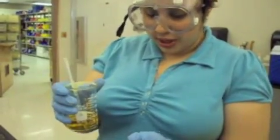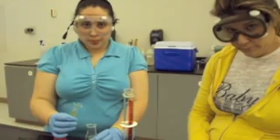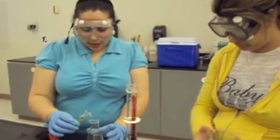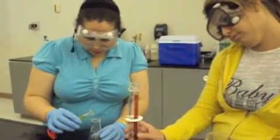This is stock solution A after dissolving our moist crop of luminol. Now we're diluting 10 milliliters of stock solution A and adding 35 milliliters of water.